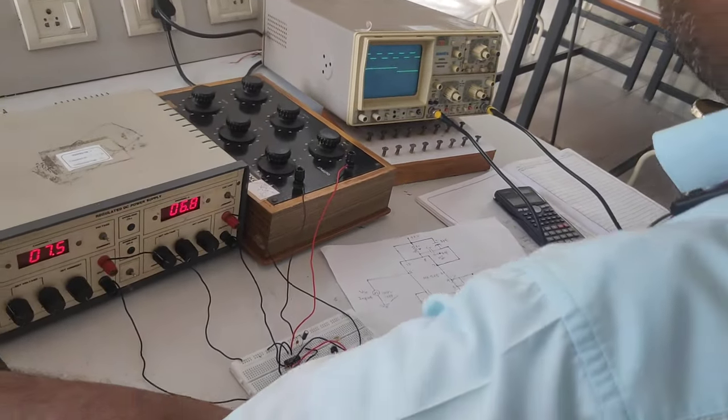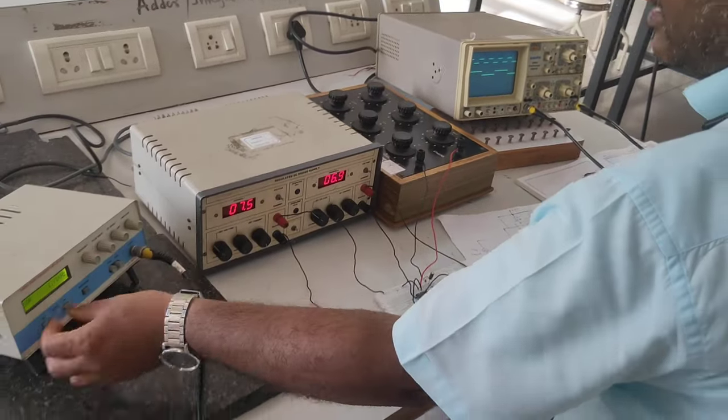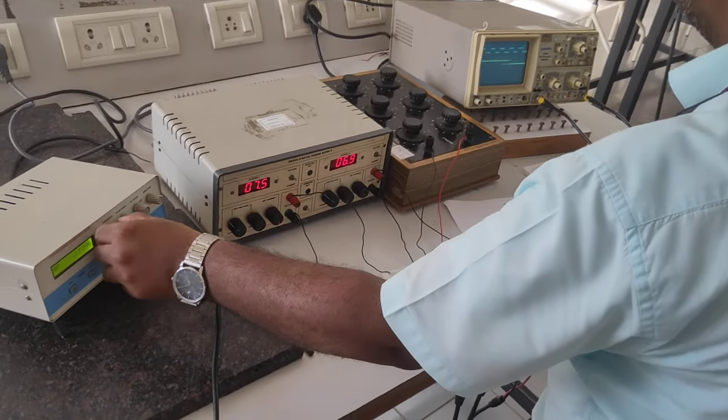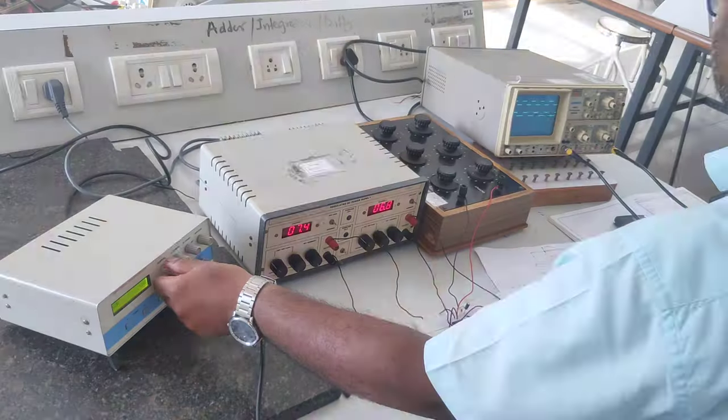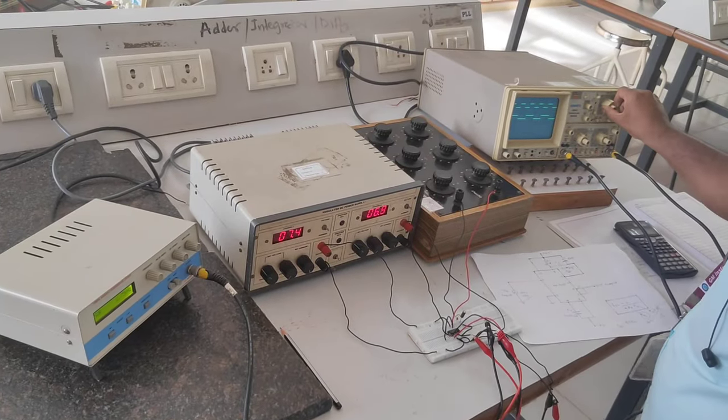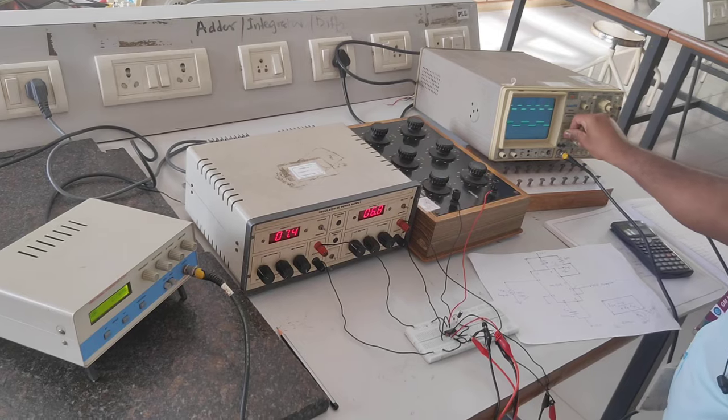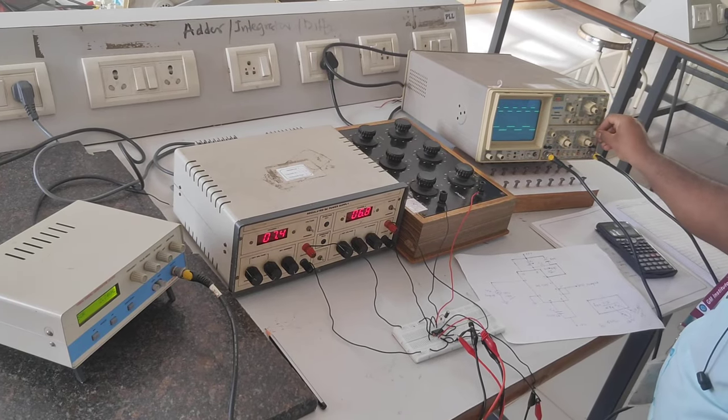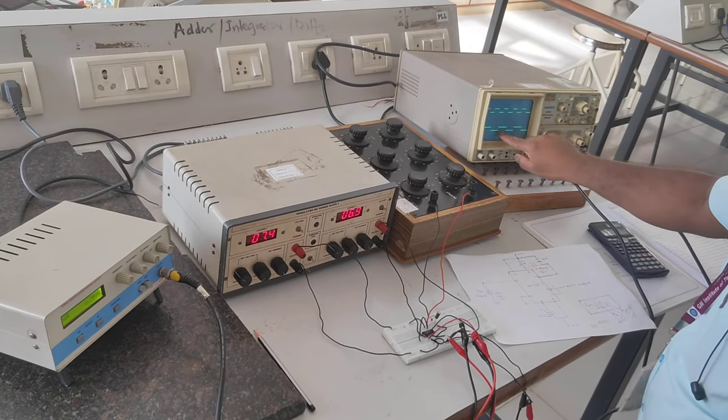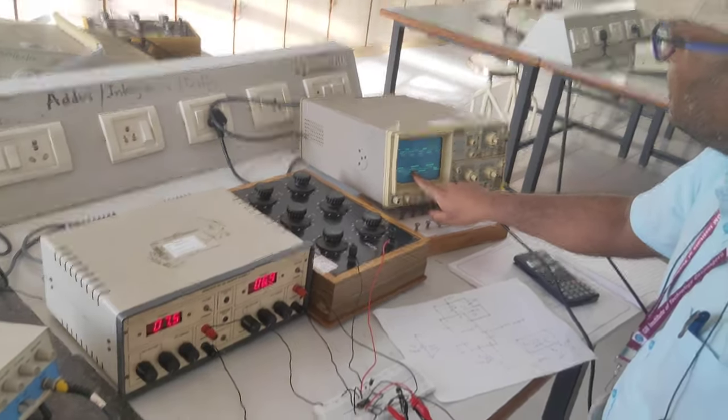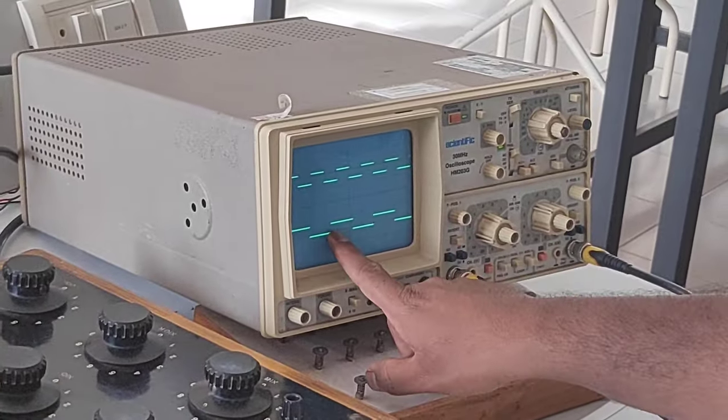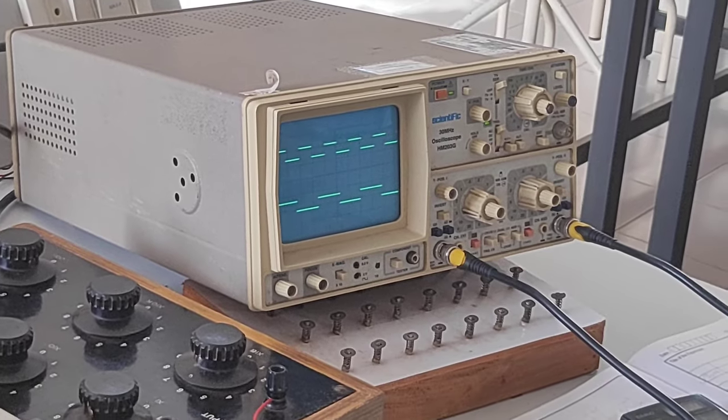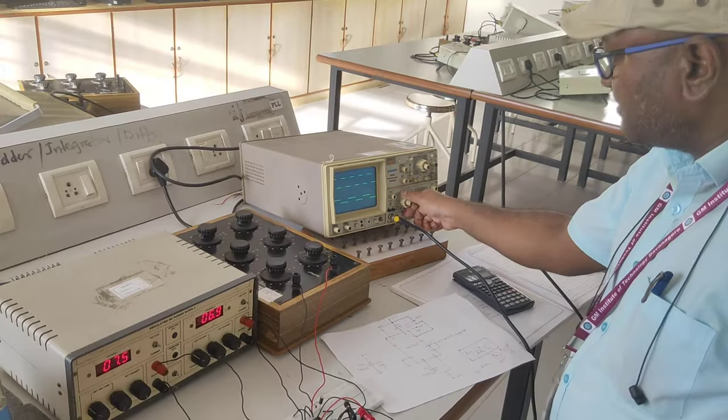So here frequency and VCO, starting from 100 Hz, you can vary. See that. Dual channel have taken. So this one is VCO output and this one is the signal what you have got from the function generator. It is VCO output, it is the input signal.